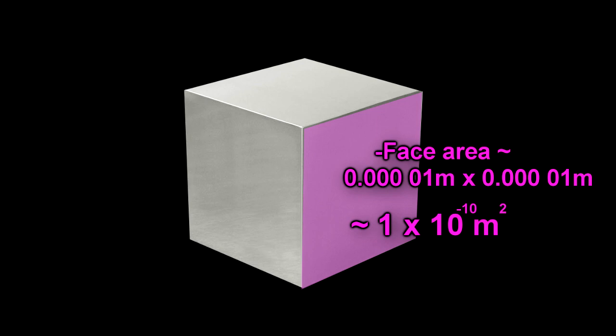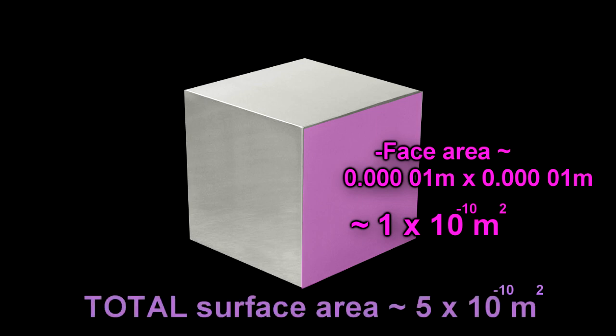And we have six of those faces in a cube, so that's about 5 times 10 to the minus 10 meters squared surface area for a single cell. It's not so much, then you consider there are some 37 trillion cells in the human body.